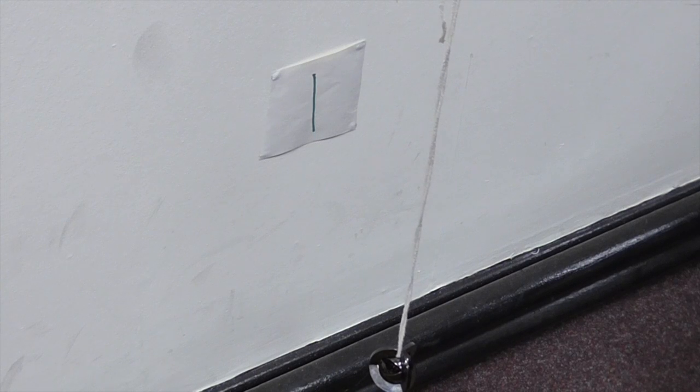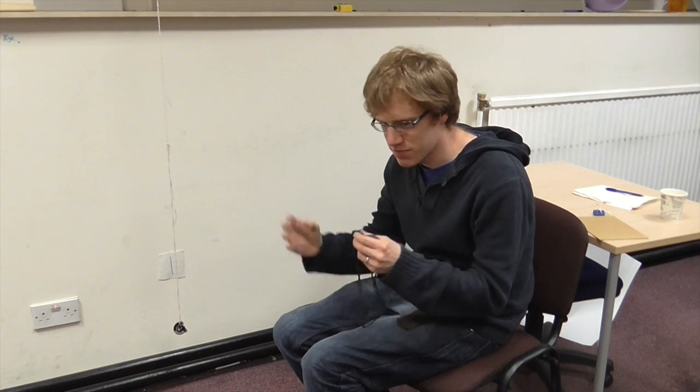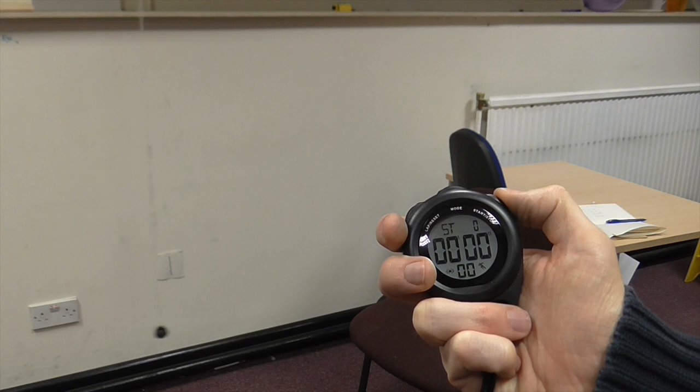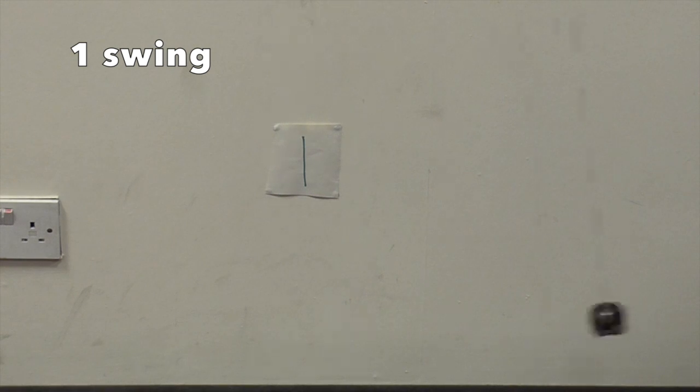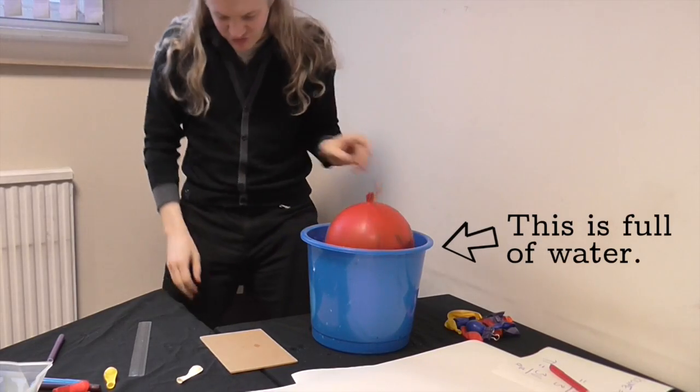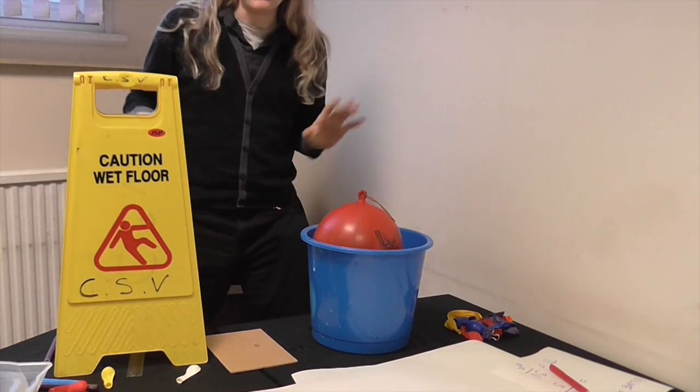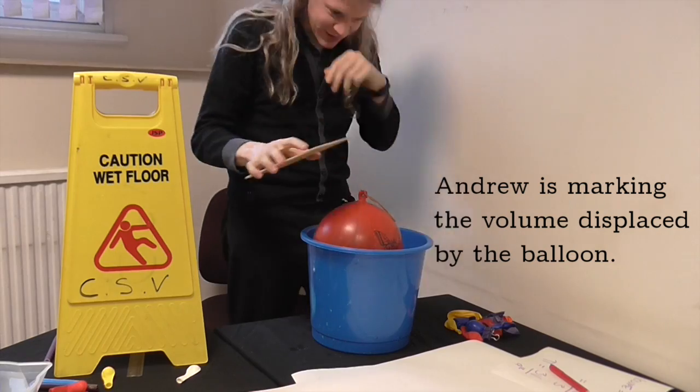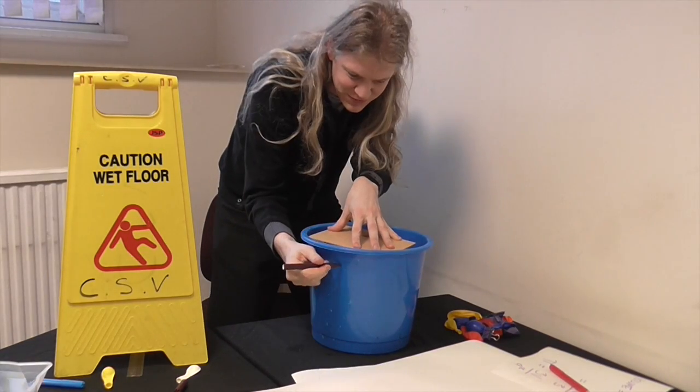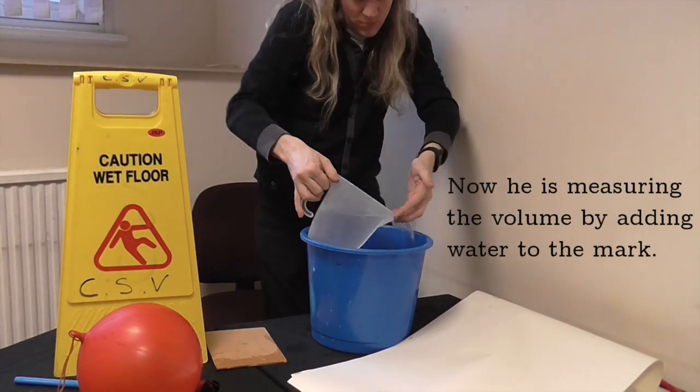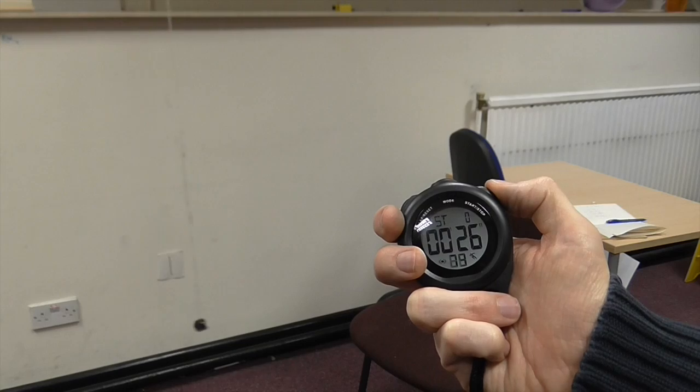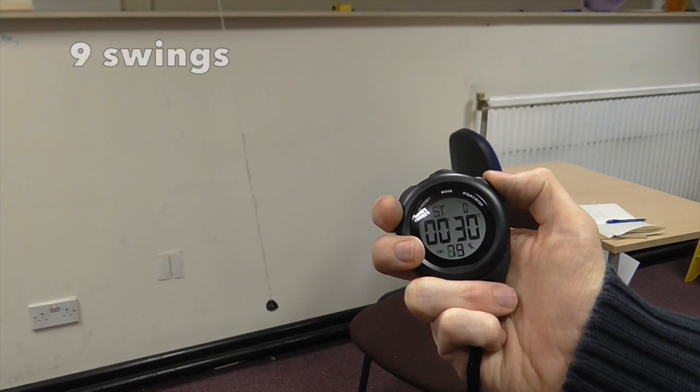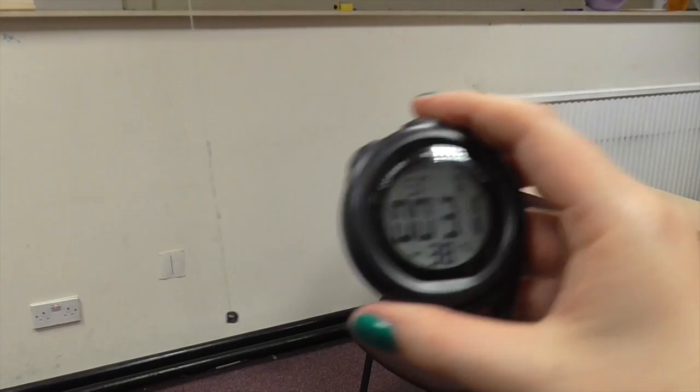So we've tested the pendulum, and so we're going to time 10 complete swings of the pendulum, and that should take 10 pi seconds, and we'll do that five times and take an average, and that'll be our final value for pi.